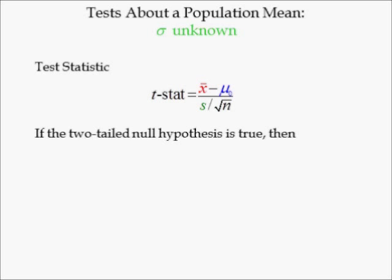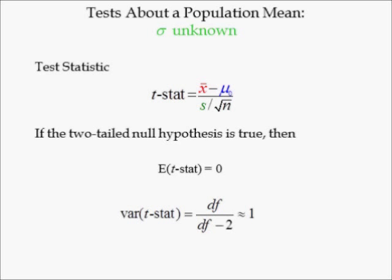If the two-tailed null hypothesis is true, then the expected value of t-stat is equal to zero. The variance of t-stat is equal to its degrees of freedom divided by degrees of freedom minus 2. The variance of t-stat is approximately equal to 1 when the sample size is small but gets closer and closer to 1 as the sample size increases, and is essentially equal to 1 when the sample size is very large. This is why t-values in the last row of the t-distribution table are identical to the corresponding z-values. If the variance is approximately equal to 1, so too is the standard deviation of t-stat.